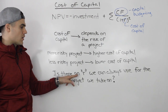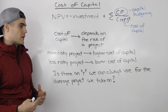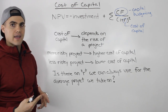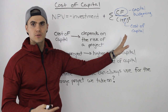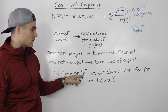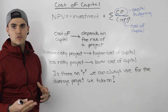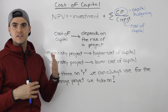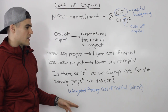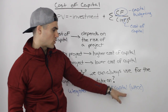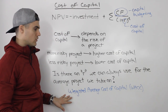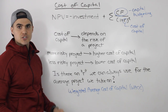So now the question is: is there an R, or a certain cost of capital, we can always use for the average project we take on? Instead of finding a specific cost of capital for every project, which can be time consuming and expensive, is there a single cost of capital we can use that would work for the average project and average out all the different riskiness levels? The answer is yes — we can use something called the weighted average cost of capital, or WACC.